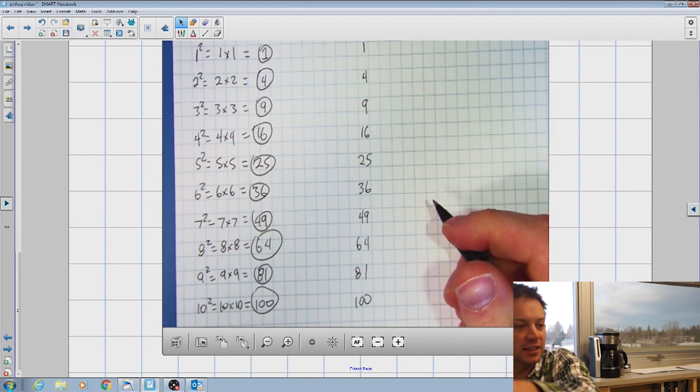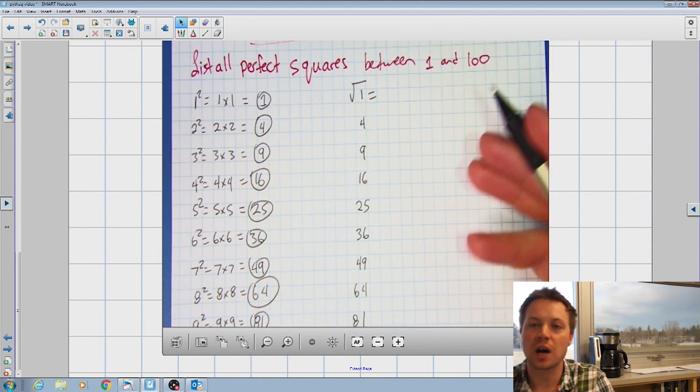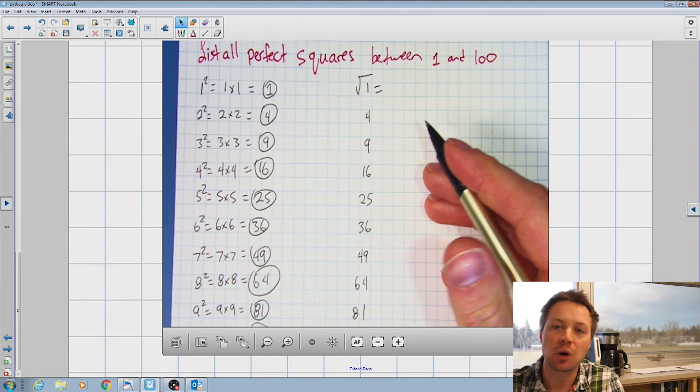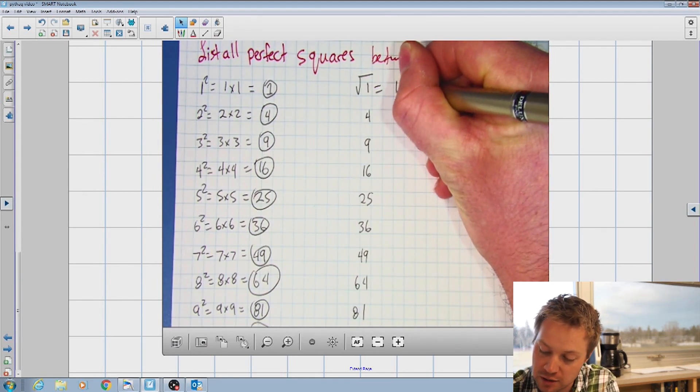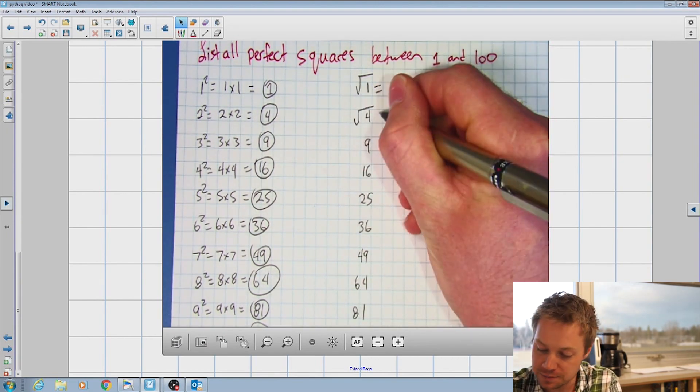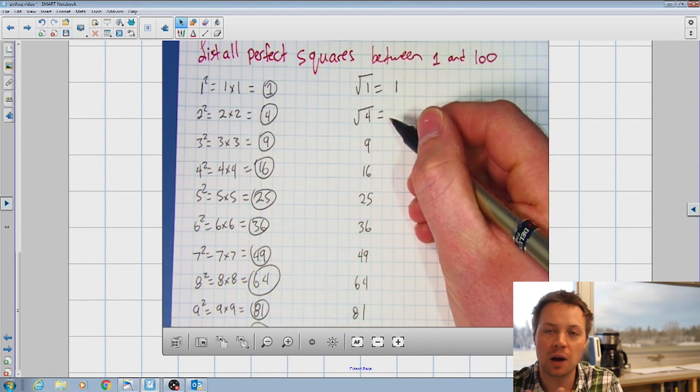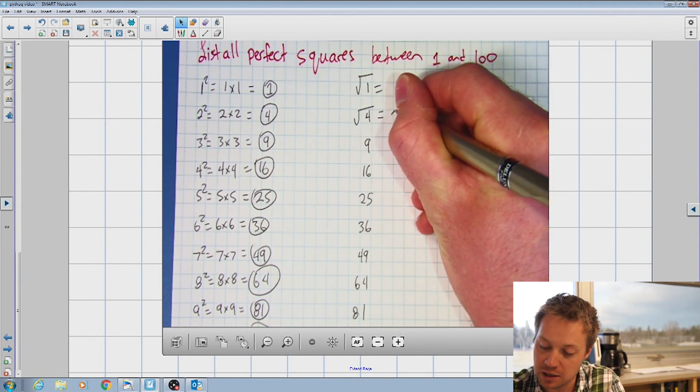Okay, so we'll start back at the top here. If I take the square root of one, again, I'm looking for the two numbers, they have to be the same, that I multiply together to make the number one. Well that's easy. One times one is one. So the square root of one is one. If I want the square root of four, again, I take the square root. And I'm looking for the two numbers that are the same I multiply together to make four. Those numbers happen to be two.